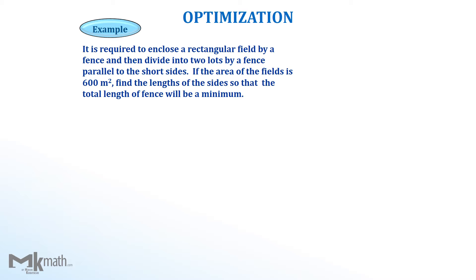Let's take a look at the example. It is required to enclose a rectangular field by a fence and then divide into two lots by a fence parallel to the short side. If the area of the field is 600 square meter, find the length of the sides so that the total length of fence will be a minimum.